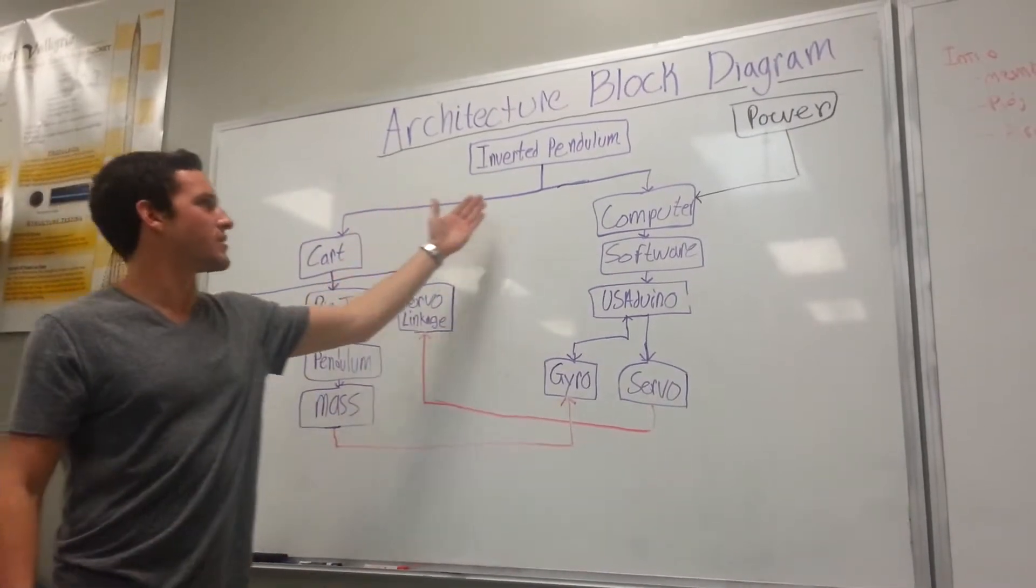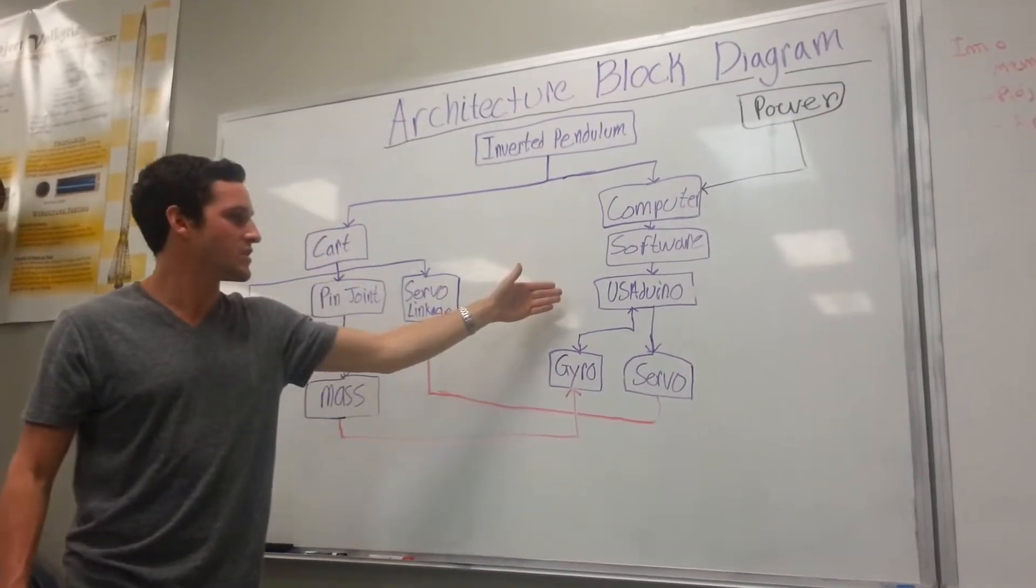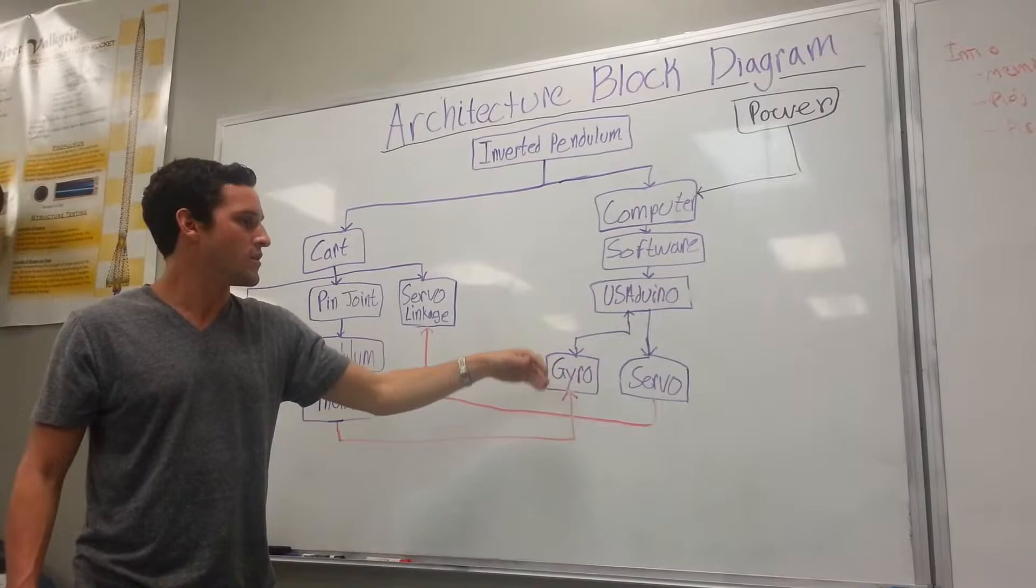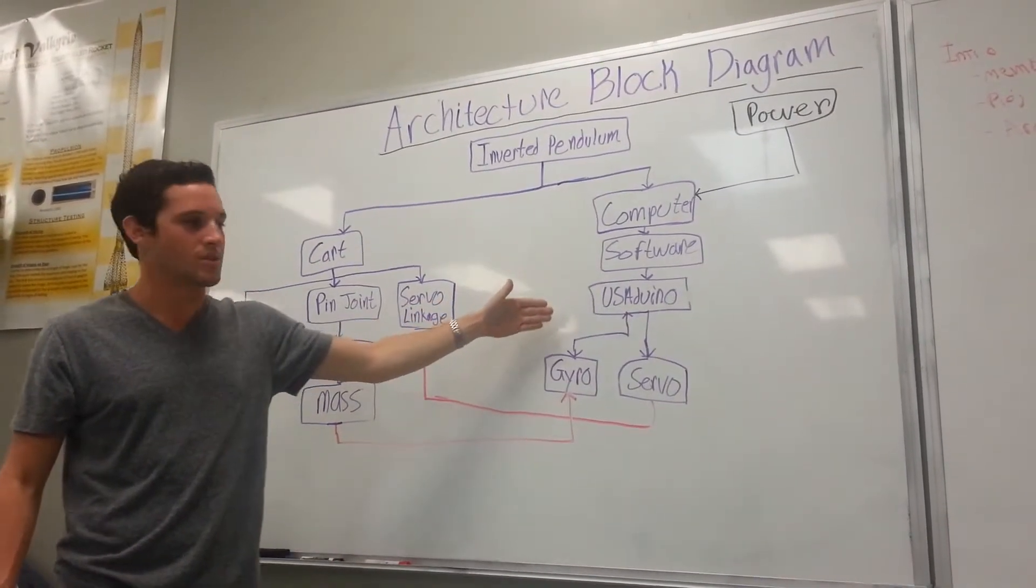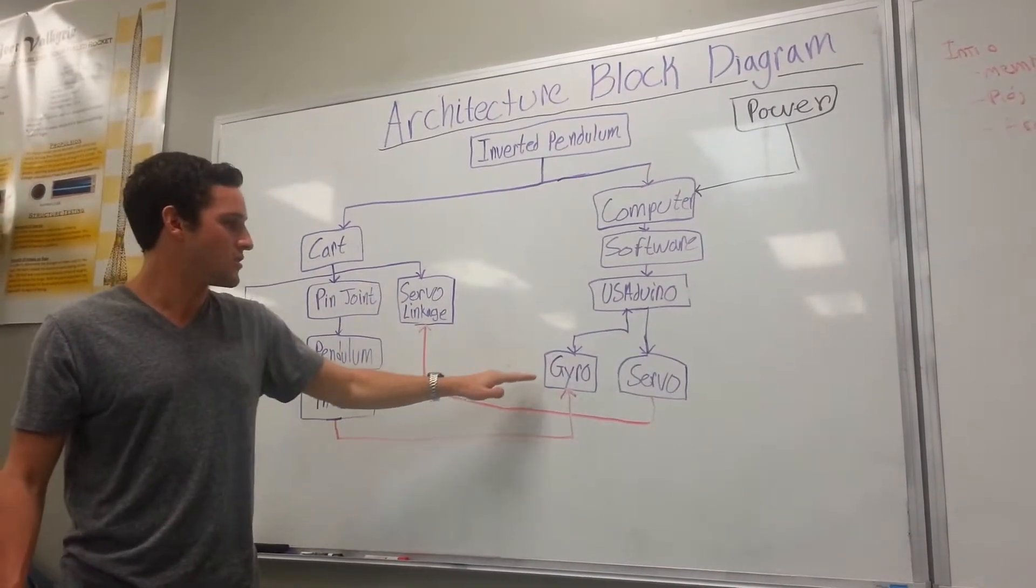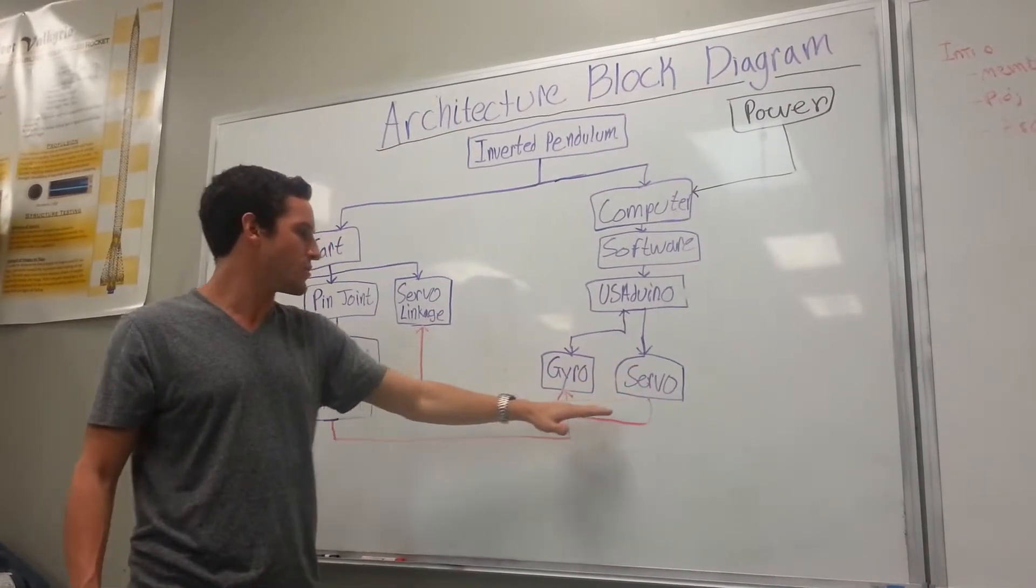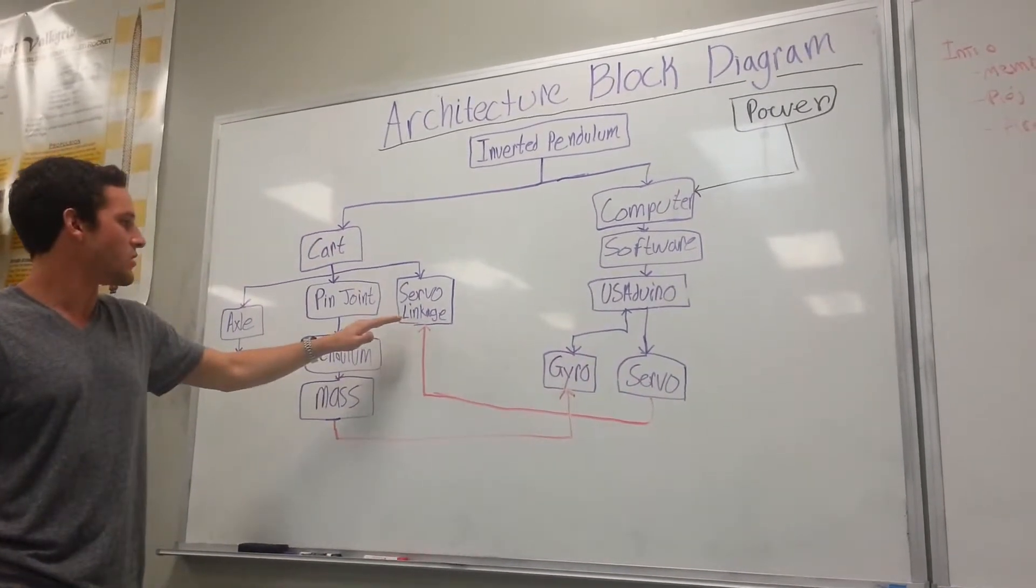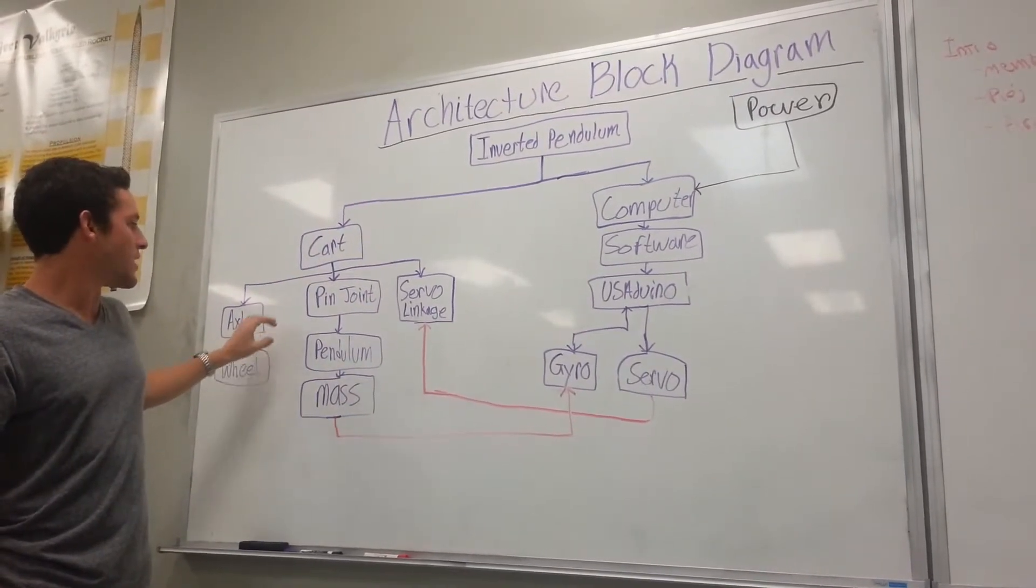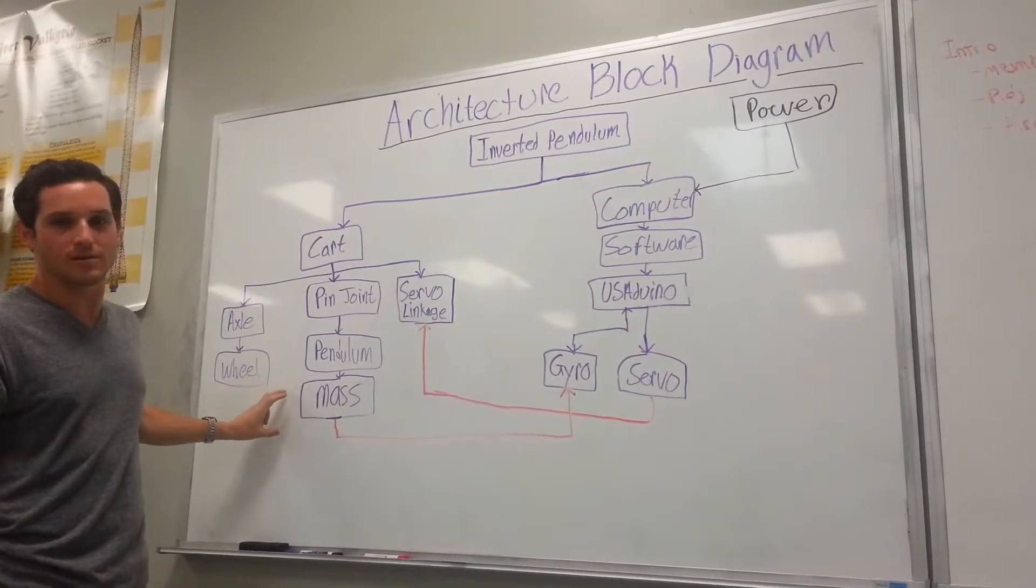So here is our architect block diagram of our inverted pendulum. Power is supplied through the computer, which is then sent to the USA Duino, and then to the gyro and the servo. Software is also delivered from the computer to the USA Duino, which gets feedback from the unbalanced mass to the gyro and back to the USA Duino, and then sent back out to the servo, which will then control the servo linkage. From here, the cart will move back and forth about its axle and wheels, and it will transfer the momentum to the pendulum to the pin joint and control the unbalanced mass.